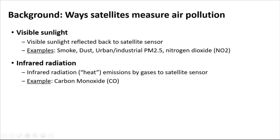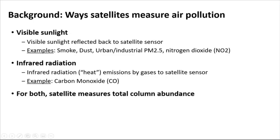In both cases, the satellite measures total column abundance: the total amount of a measured air pollution species in the column of atmosphere within the line of sight of the satellite, extending from the surface to the top of the atmosphere. Common expressions of column abundance are aerosol optical depth, abbreviated AOD for aerosols, and the number of molecules per column surface area for gases.